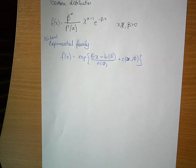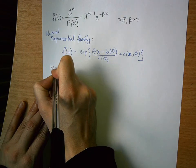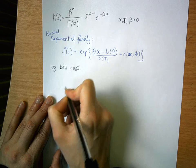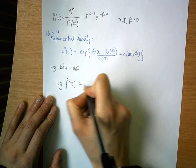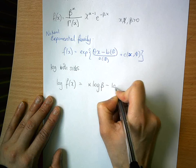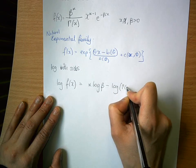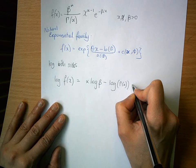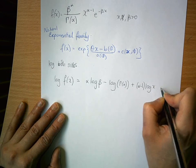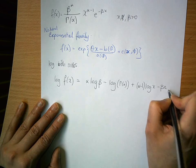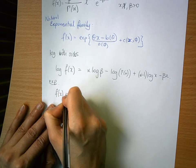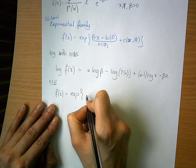We begin by taking the log of both sides. So we get log f(x) = alpha*log(beta) - log(gamma(alpha)) + (alpha-1)*log(x) - beta*x. Then we exponentiate both sides, so f(x) is equal to the exponential of all of the above.